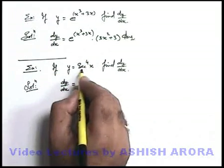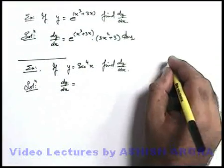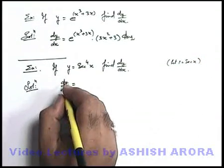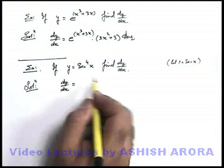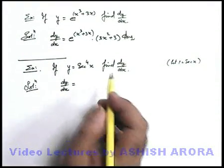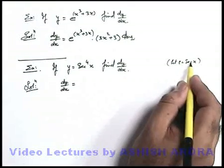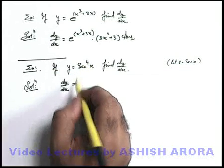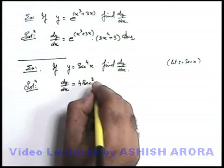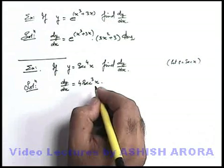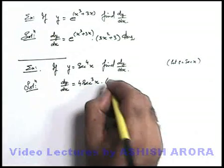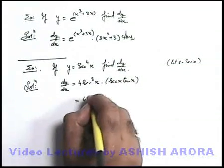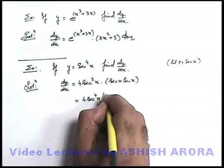The internal function here is sec x, so I take sec x as t — just suppose t equals sec x in your mind. You then see y equals t to the power four. When we differentiate it, it becomes four t cubed, that is four sec cubed x. Now multiply it with the differentiation of t, which is sec x tan x. So the final result becomes four sec to the power four x into tan x, which is the answer.